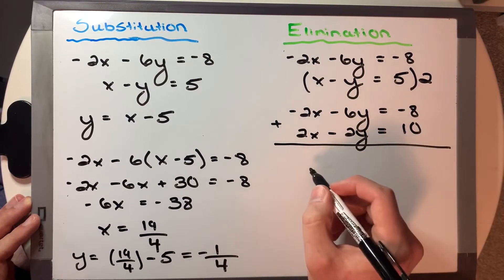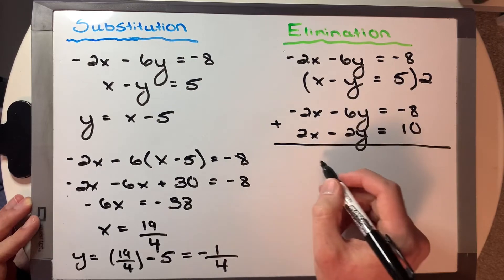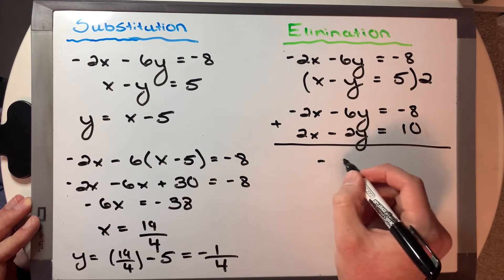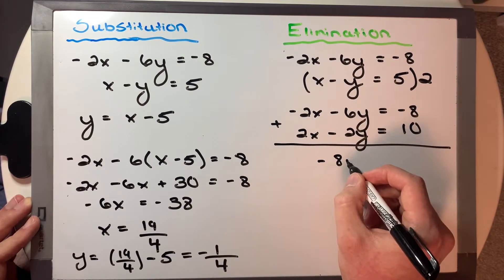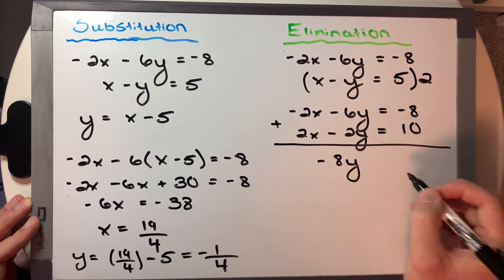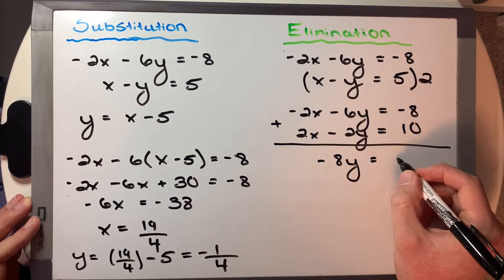We're going to add them together to get our new equation, so that's going to eliminate the x's. Add those 2 y's, and then add these two terms on the end, which will give us 2.